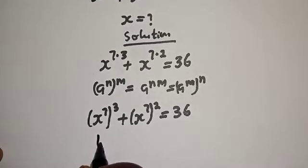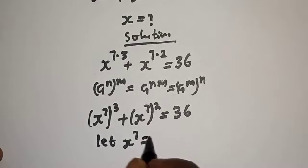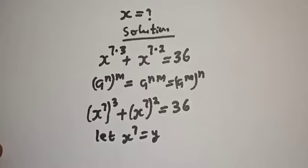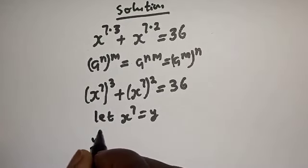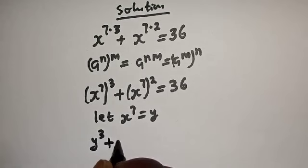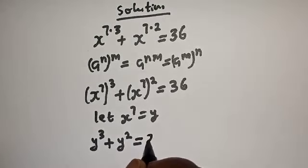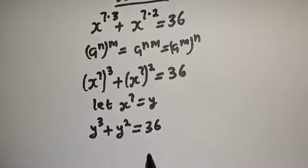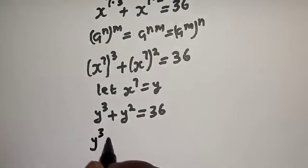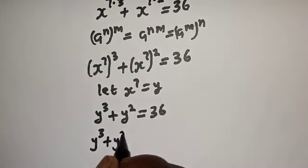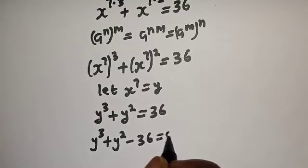Let s raised to power 7 equal y. Then the equation becomes y raised to power 3 plus y squared is equal to 36. Bringing everything to one side, we get y raised to power 3 plus y squared minus 36 is equal to 0.